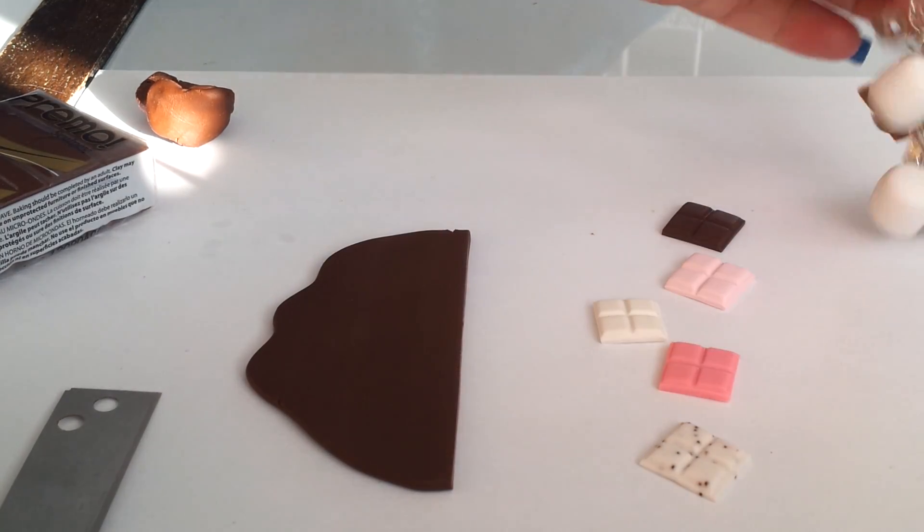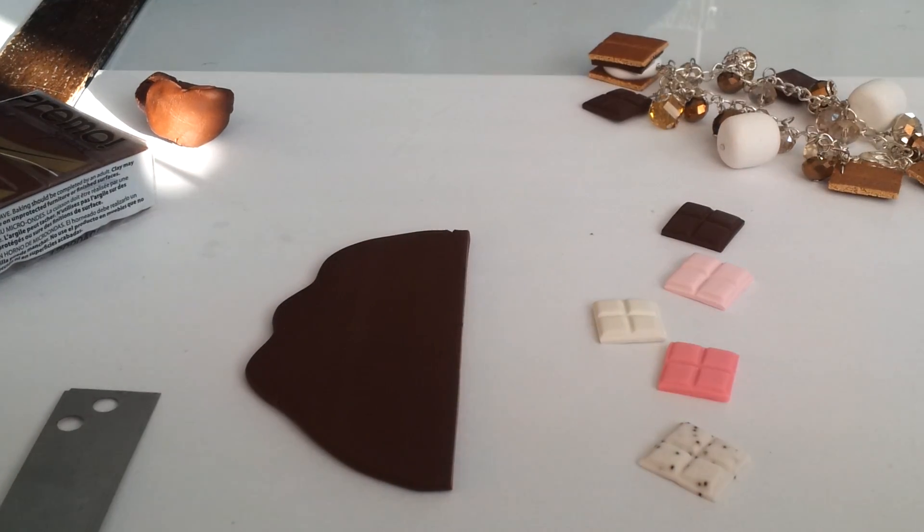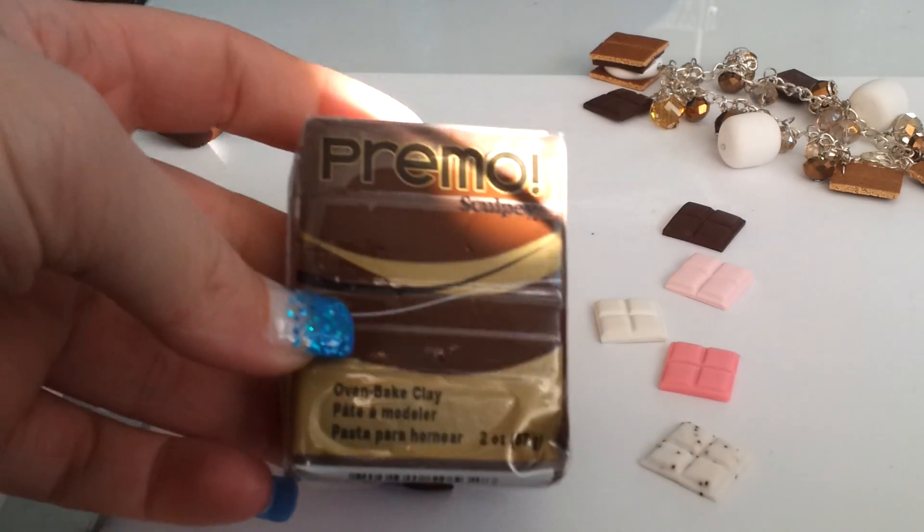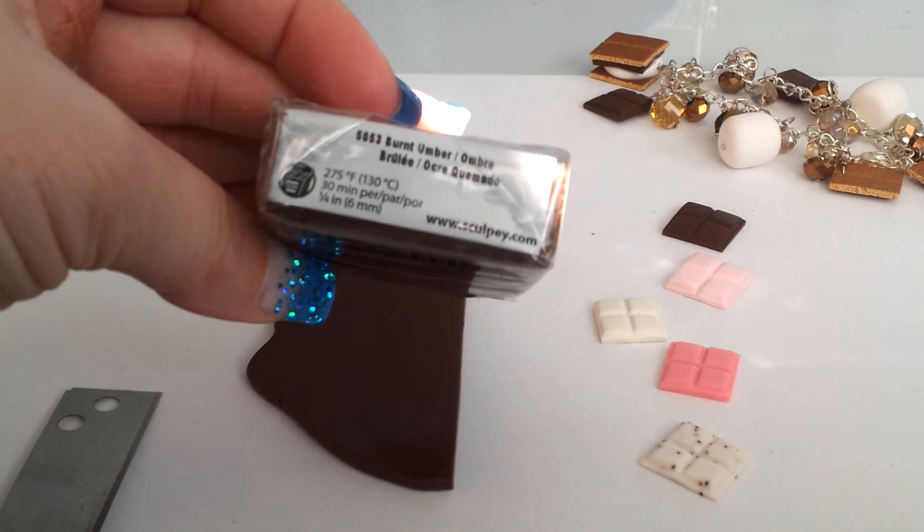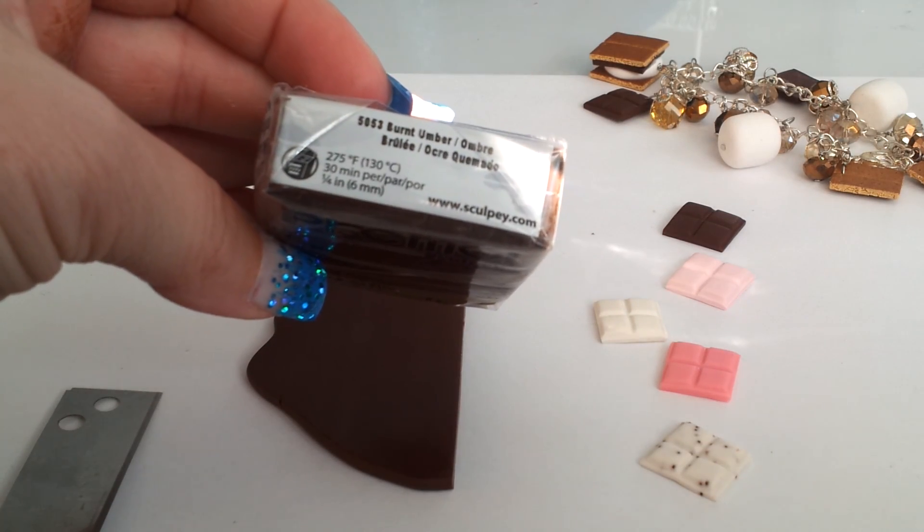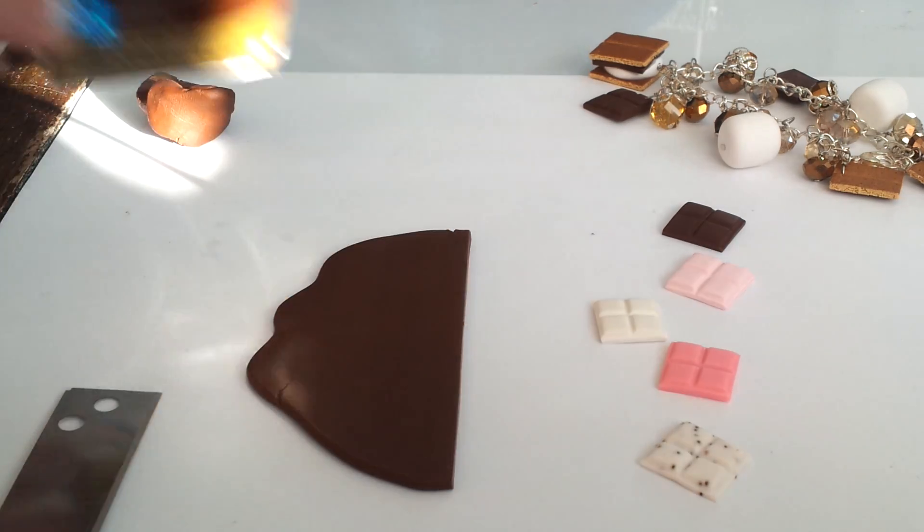You might not necessarily need them, but they're kind of nice and sometimes I have bonus recipes on the bottom. For my dark chocolate, I use Primo Burnt Umber. I think it's a really nice rich dark chocolate color.